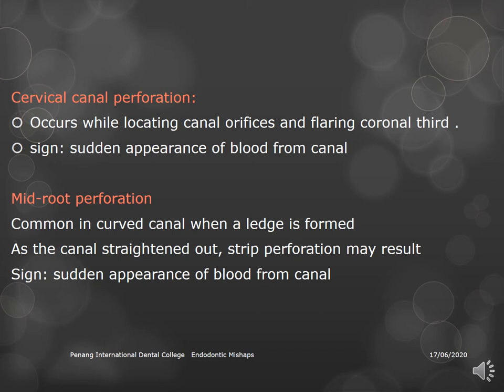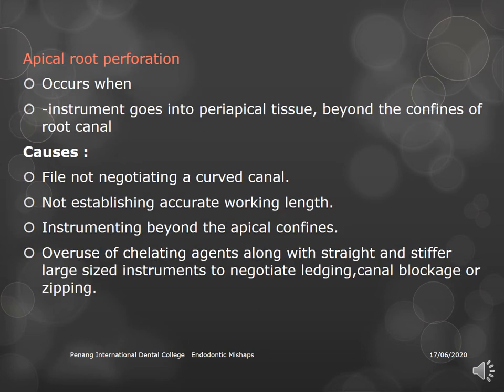If the canal straightens out, it may lead to strip perforation. In all perforation cases, there is a sudden appearance of blood coming from the canal. Apical root perforation occurs when the instrument goes beyond the confines of the root canal into the periapical area, due to overestimation of working length or failure to maintain the working length.